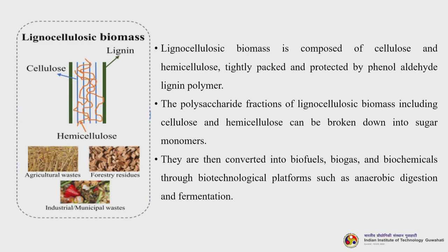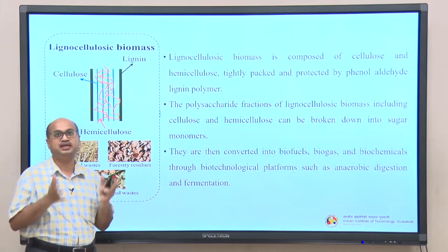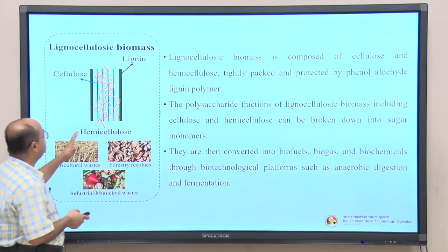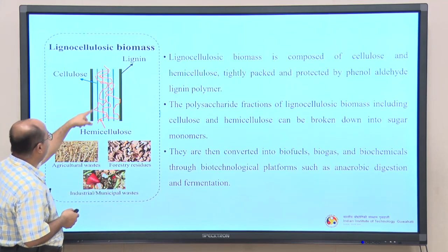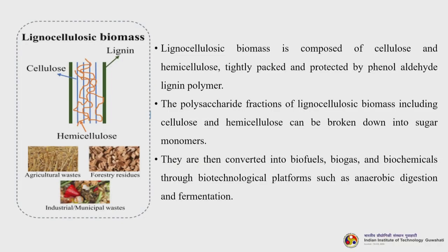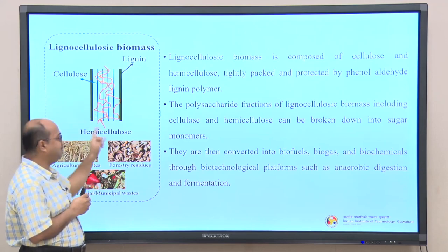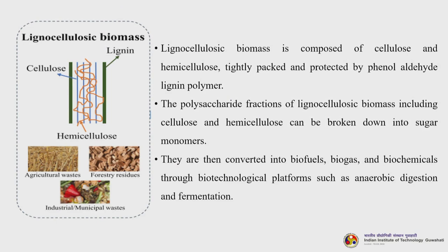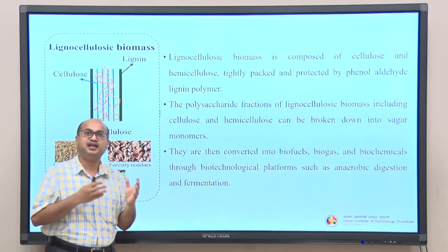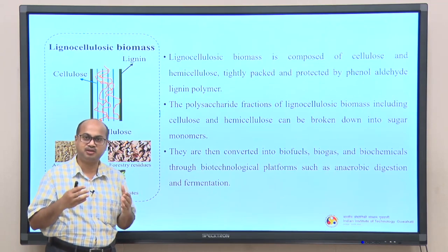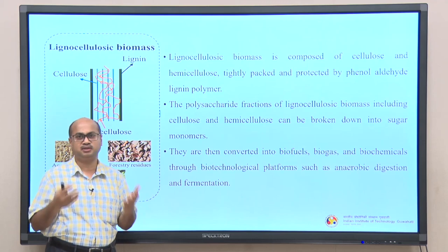We have previously discussed how cellulose, hemicellulose and lignin are intricately bound together. Cellulose is the blue part, lignin is the green part, and hemicellulose is the red or orange part. These are intricately bound together — that is the reason why pretreatment is required. We want to disintegrate this structure to release cellulose and hemicellulose. Then we go for hydrolysis to get C6 and C5 sugars, which will be fermented to bioethanol, alcohol platforms and other chemicals.